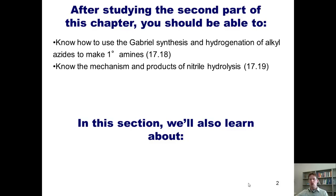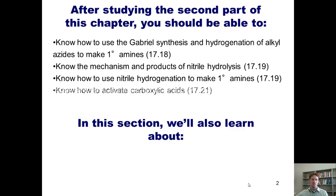Know the mechanism and products of nitrile hydrolysis, know how to use nitrile hydrogenation to make primary amines, know how to activate carboxylic acids, and apply all of this knowledge to total synthesis. Each of these numbers, 17, 18, 19, 20, and 21, are the sections in your textbook that cover each of these different topics.